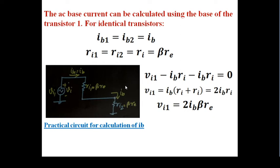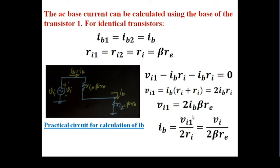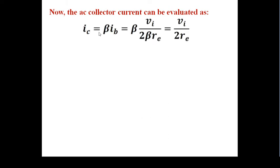Now we find the AC collector current. IC equals beta times ib. We already found ib equals VI1 divided by 2 times beta*re. Substituting, beta cancels and IC equals vi divided by 2*re. This is a simple step requiring only fundamental circuit theory.